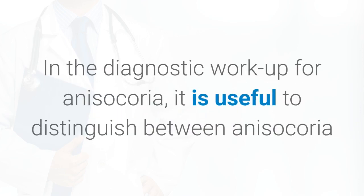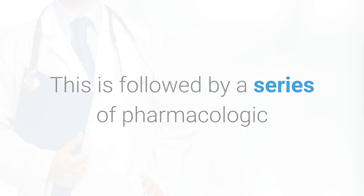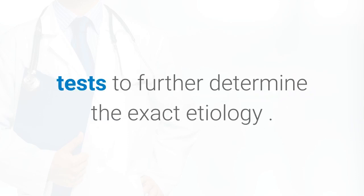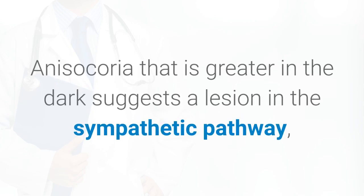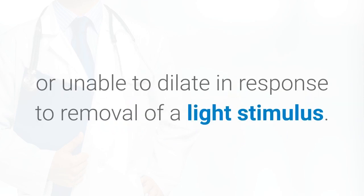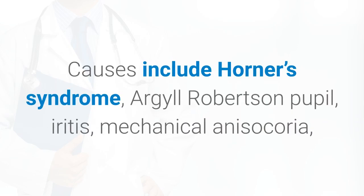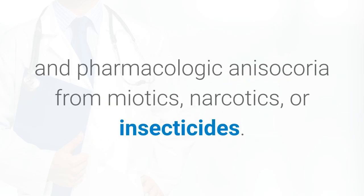In the diagnostic workup for anisocoria, it is useful to distinguish between anisocoria that is greater in the dark and anisocoria that is greater in the light, followed by pharmacologic tests to determine the exact etiology. Anisocoria that is greater in the dark suggests a lesion in the sympathetic pathway, resulting in an abnormal pupil that is smaller or unable to dilate in response to removal of a light stimulus. Causes include Horner's syndrome, Argyll Robertson pupil, iritis, mechanical anisocoria, and pharmacologic anisocoria from miotics, narcotics, or insecticides.